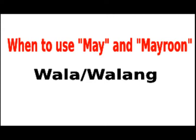Two. Mayroon is followed by a personal pronoun such as ako, ka, tayo, kami, kayo, and sila in inverted sentences to indicate possession. The suffix ligature 'nang' is attached to these pronouns. May bahay kami sa Maynila. — We have a house in Manila. Mayroon kaming bahay sa Maynila.